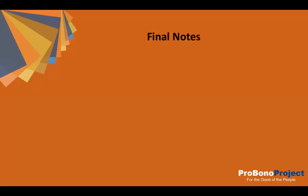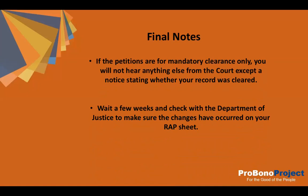Some final notes: if your petitions are only for mandatory clearance, you will not hear anything else from the court, but should receive a document in the mail stating that your record has officially been changed. You should wait a few weeks and then check with the Department of Justice to review your rap sheet to make sure the changes have occurred. Thank you for listening to our video presentation on how to fill out mandatory record clearance forms CR180 and CR181.